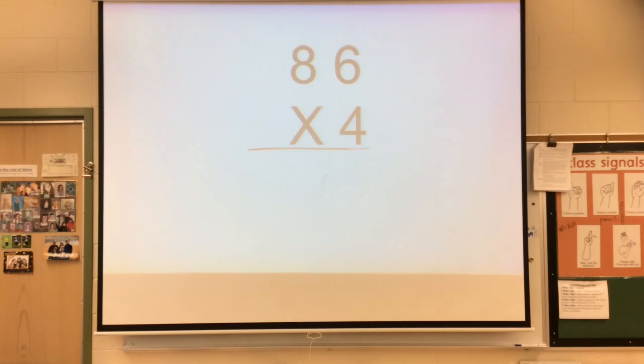I'll do one more for you here. So 86 times 4, that's really 4 times 80 and 4 times 6. So if I do 4 times 6 first, that would be 24, right? So 24 is really 2 tens and 4 ones. And now I'm multiplying 8 times 4, but it's really 80 times 4. So 8 tens times 4 would be 32 tens. Don't forget about the 2 more tens. That would be 34 tens. So the answer to 86 times 4 would be 344.